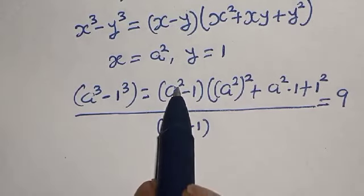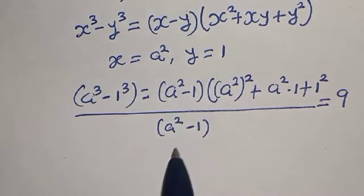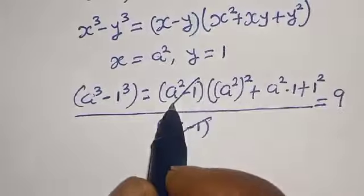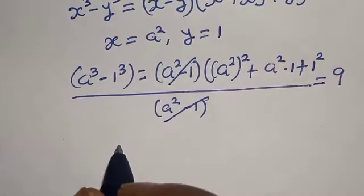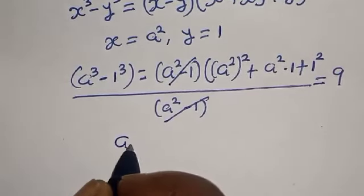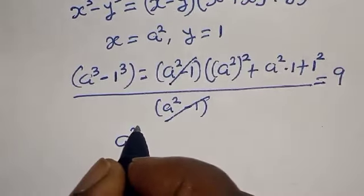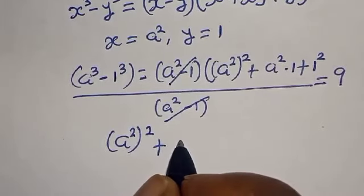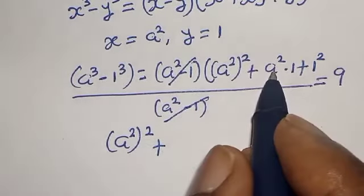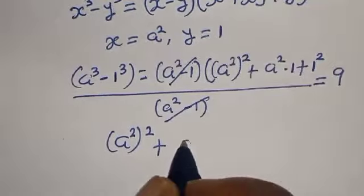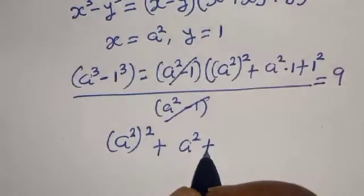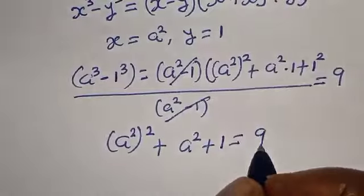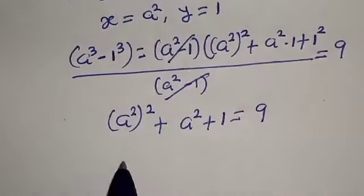Now we have a squared minus 1 in both the numerator factor and the denominator, so they cancel. We are left with a squared squared plus a squared times 1, plus 1 squared equals 1, which gives us a to the power 4 plus a squared plus 1 is equal to 9.